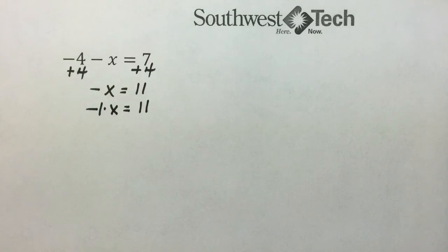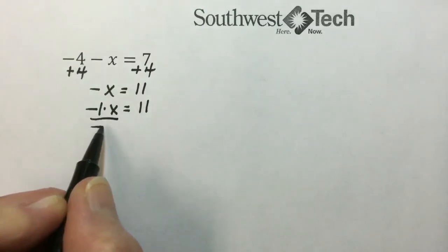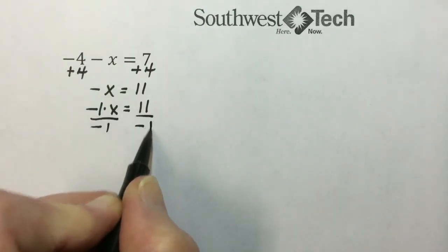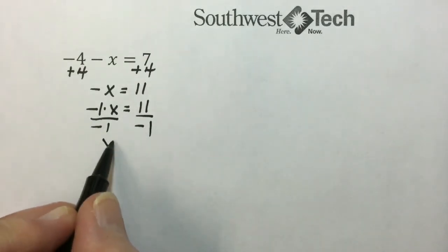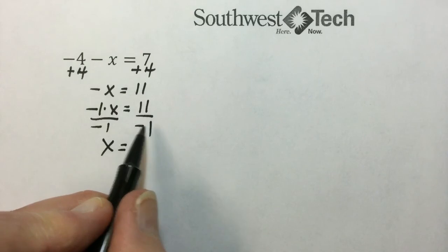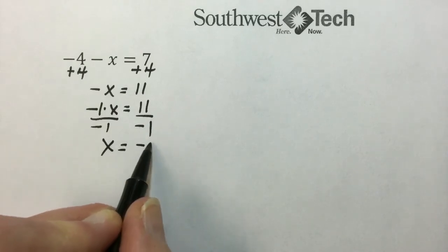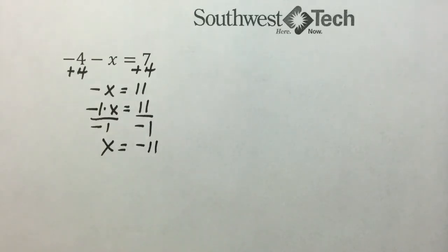And here you have a choice. You can either multiply both sides by negative 1 or divide both sides by negative 1. Negative divided by a negative is positive. Positive divided by a negative is a negative. And the result is a negative 11 for our solution.